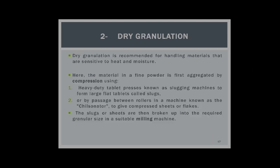Dry granulation is recommended for handling materials that are sensitive to heat or moisture. The material in fine powder form is first aggregated by compression using a heavy-duty tablet press known as a slugging machine to form large flat tablets called slugs. A chilsonator — an updated version of the slugging machine — can also be used. The slugs or sheets are then broken up into the required granular size in a suitable milling machine.